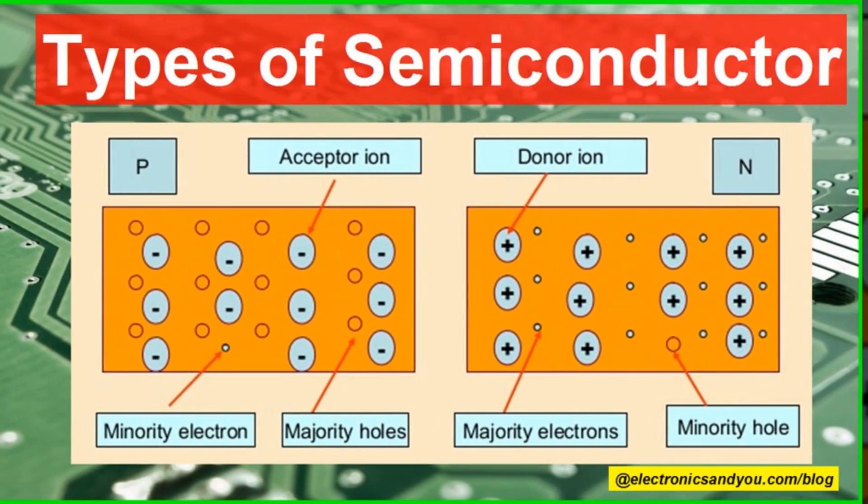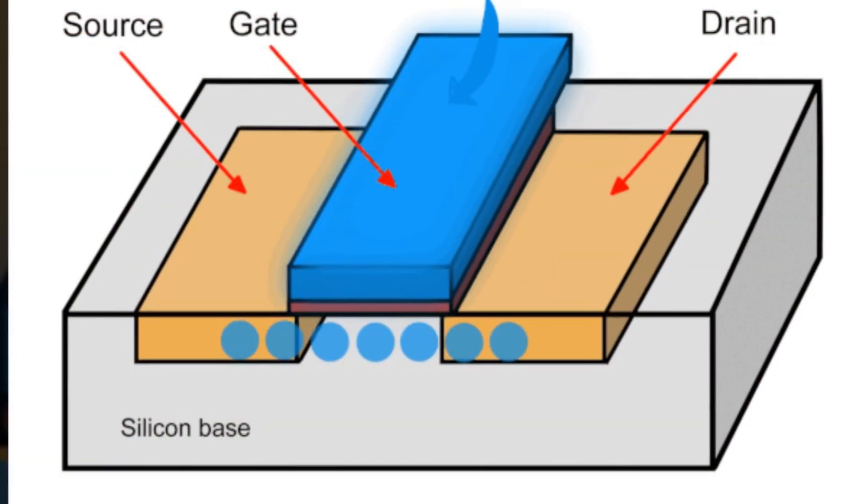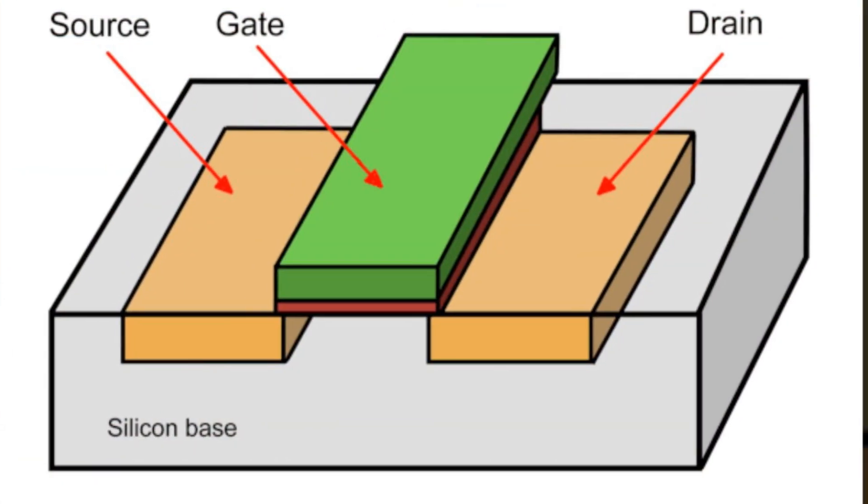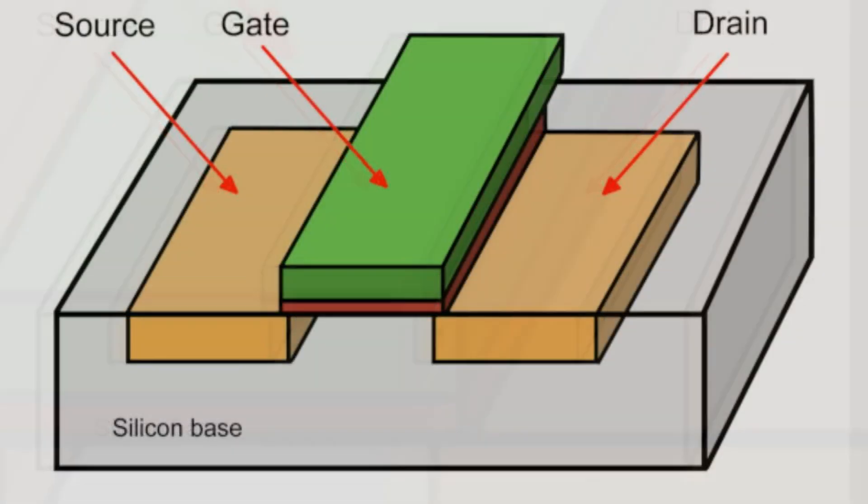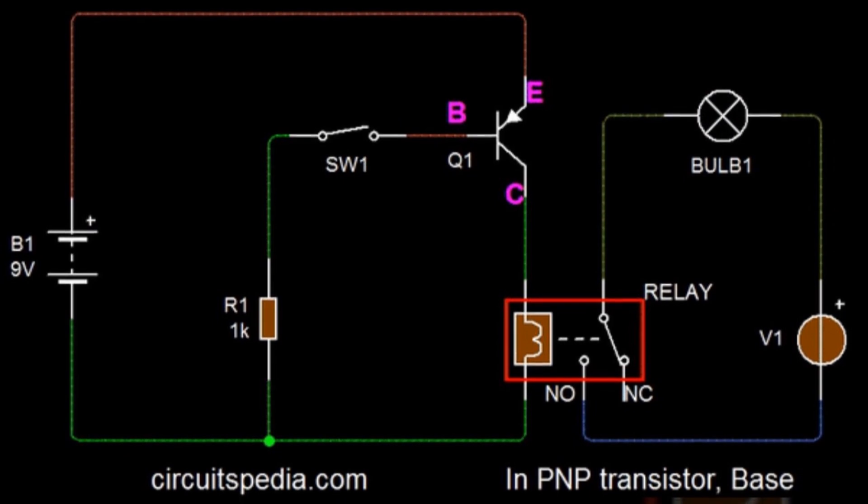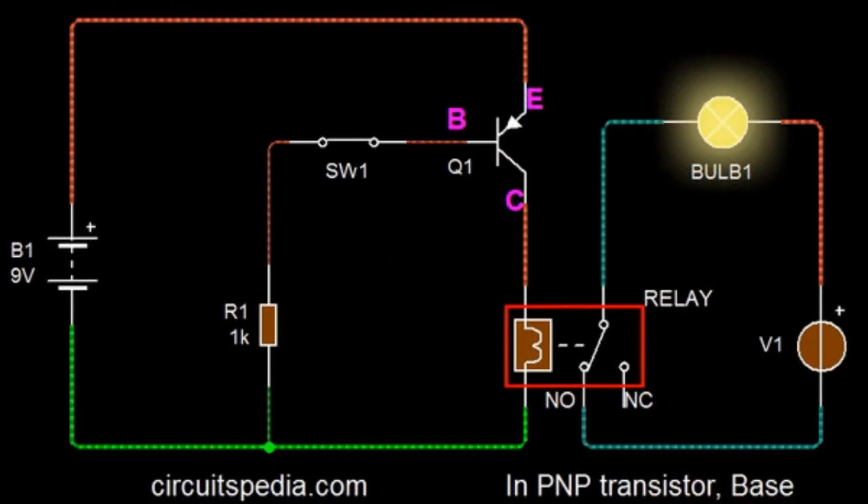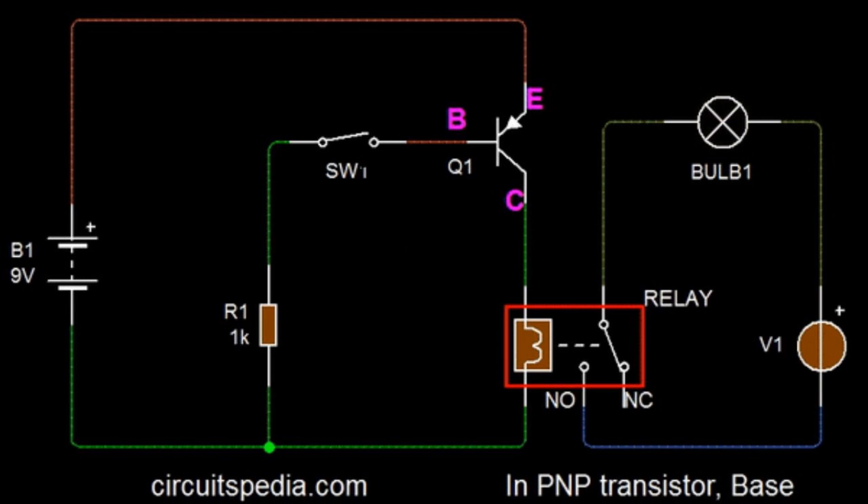This magic is enabled by a handy class of materials called semiconductors. A transistor is made up of three layers of these semiconductors. The middle layer, the gate, decides whether the transistor is on or off. When we apply a small voltage to the gate, it allows a larger current to flow from one side of the transistor to the other.